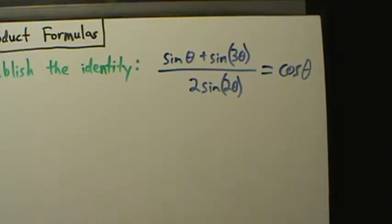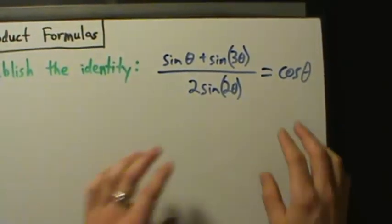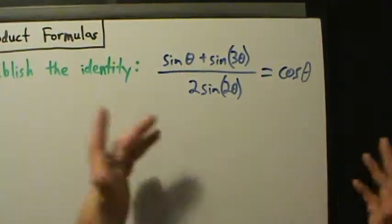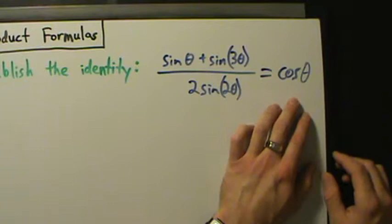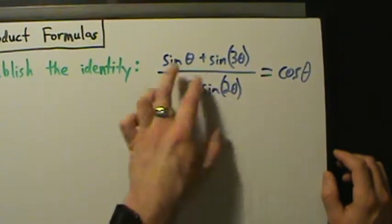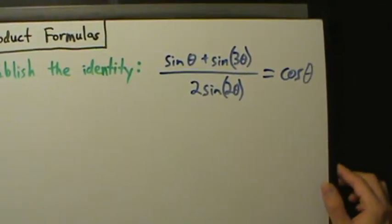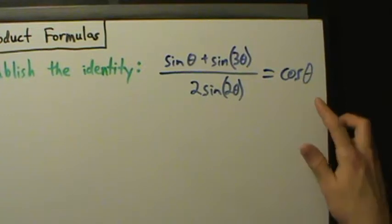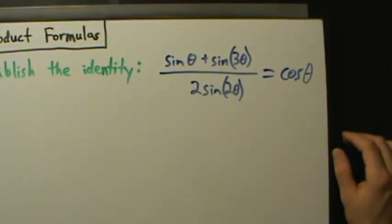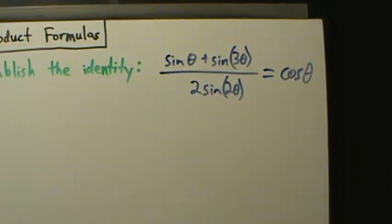What you almost always do is start on the more complicated side. If we look at these two sides, the left side is definitely more complicated. The right side is just cosine of theta — there's really nothing we can obviously do starting from there. So definitely start on the left side for this identity. Let's go ahead and do that.